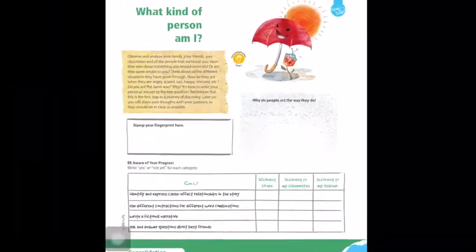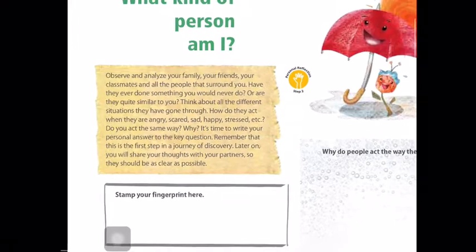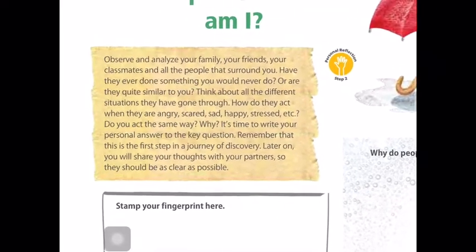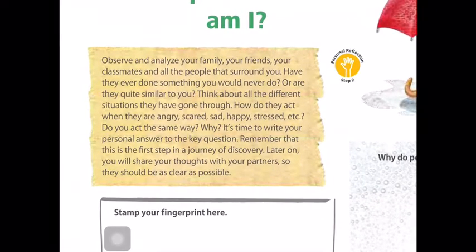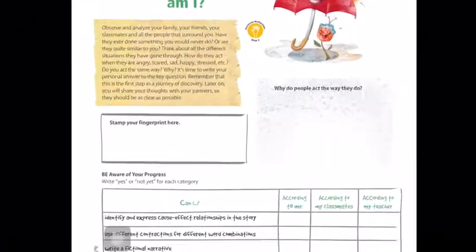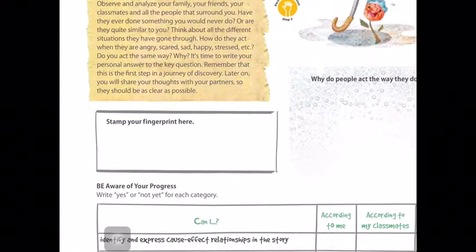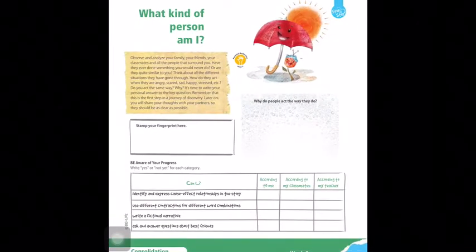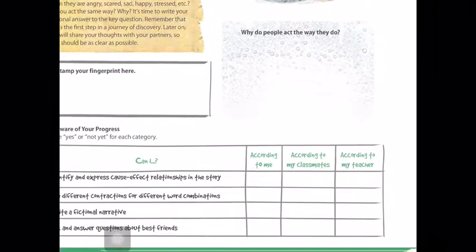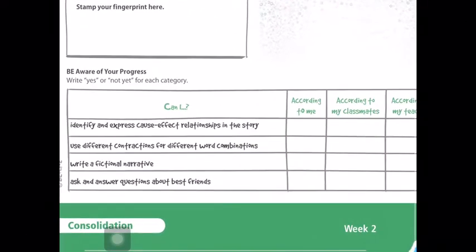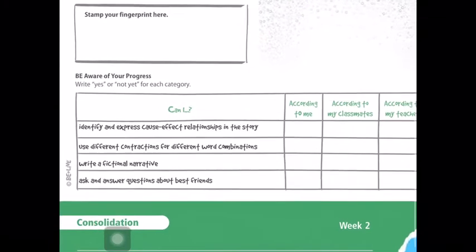On page 43, what kind of person am I? You have to read, okay, this text, stamp your fingerprint here. Why do people act the way they do?